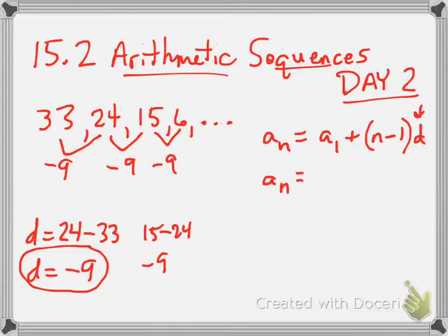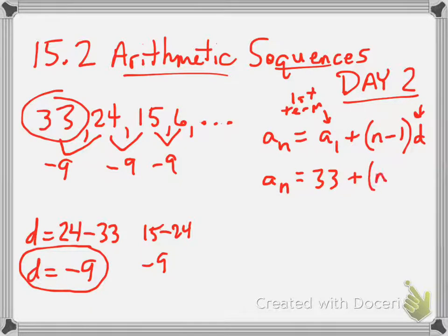So a sub n, and by the way, we do not know what n is. We're just finding the formula. That's all, just the formula. Now, a sub 1 is the first term. Well, the first term is 33.